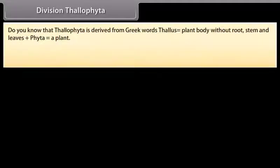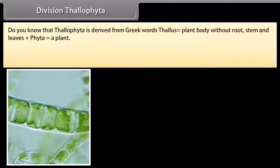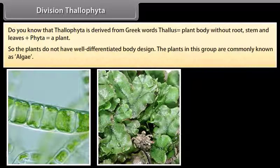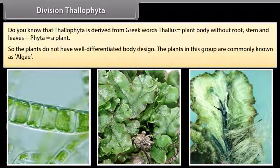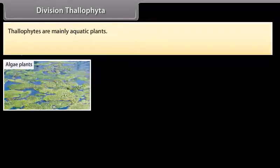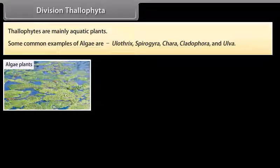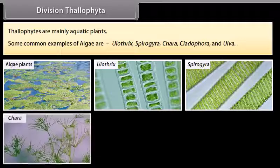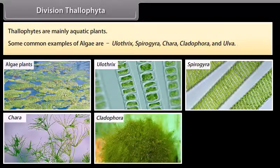Division Thallophyta: Thallophyta is derived from Greek words 'thalus' meaning plant body without root, stem and leaves, plus 'phyta' meaning a plant. So the plants do not have a well-differentiated body design. The plants in this group are commonly known as algae. Thallophytes are mainly aquatic plants. Some common examples of algae are Ulothrix, Spirogyra, Chara, Cladophora and Ulva.